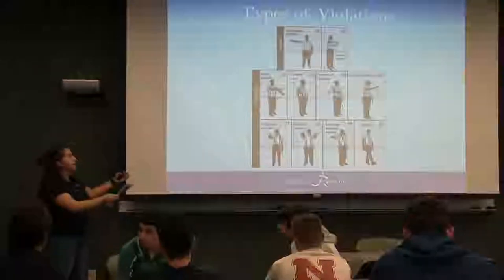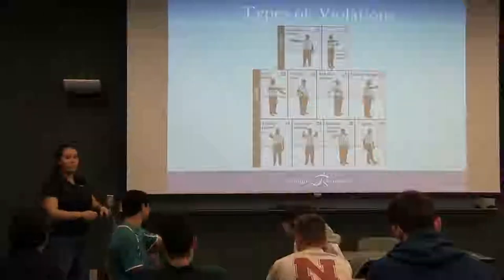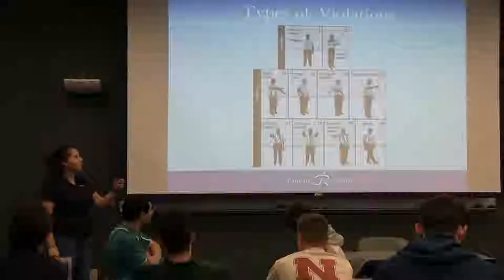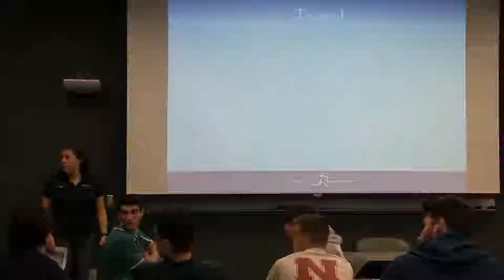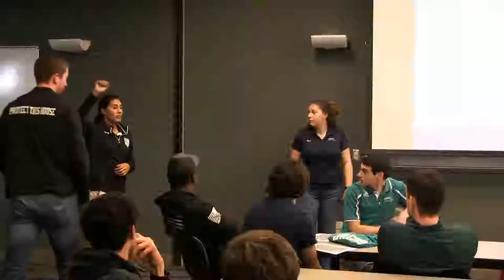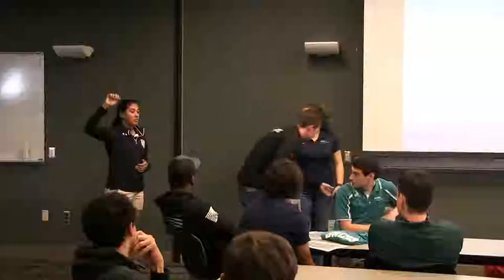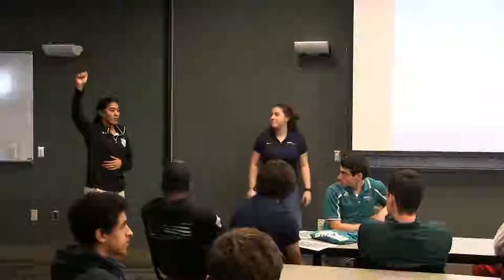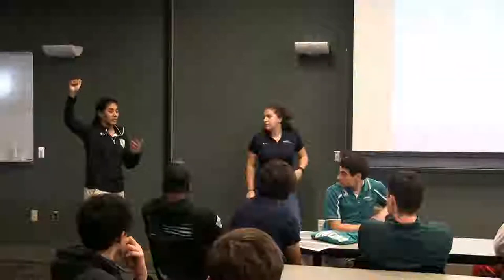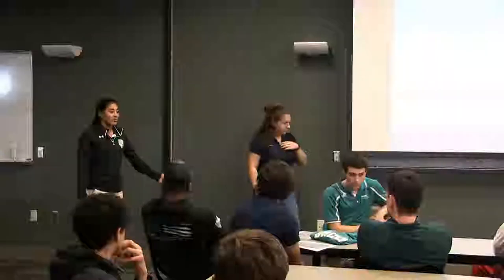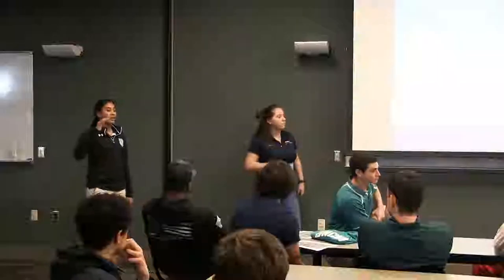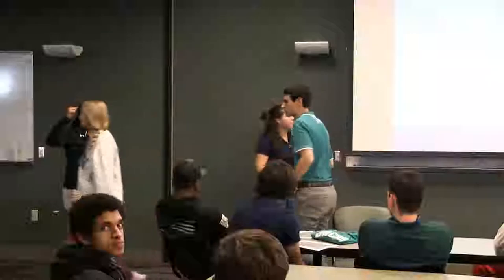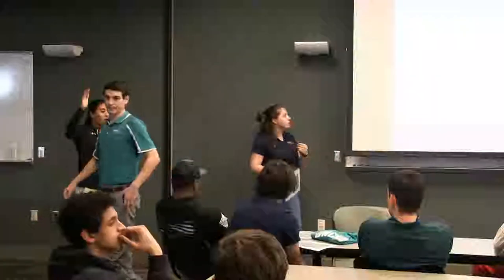When you call a violation, your palm is always going to be out. When you do a foul, you will have a closed fist. A big thing to focus on: if it is a violation, it is an open palm. Don't come up with a fist because players will think you are calling a foul when the ball just went out of bounds. You will want to come up with a fist most of the time because it is more natural, but it is a palm for any violation.